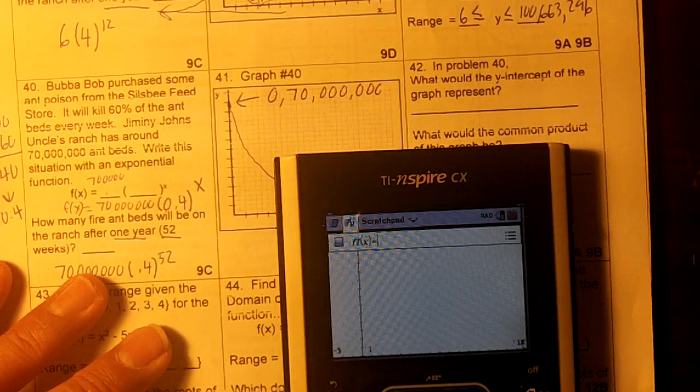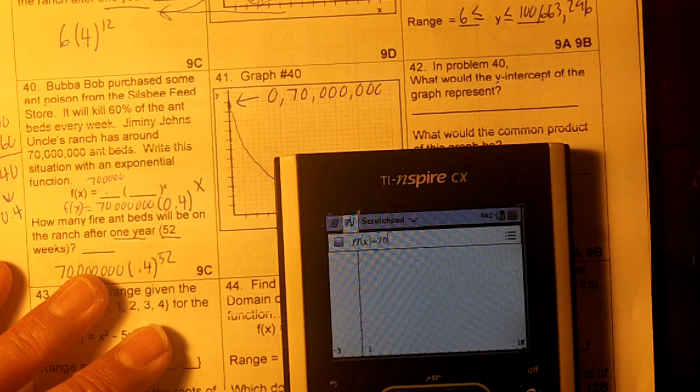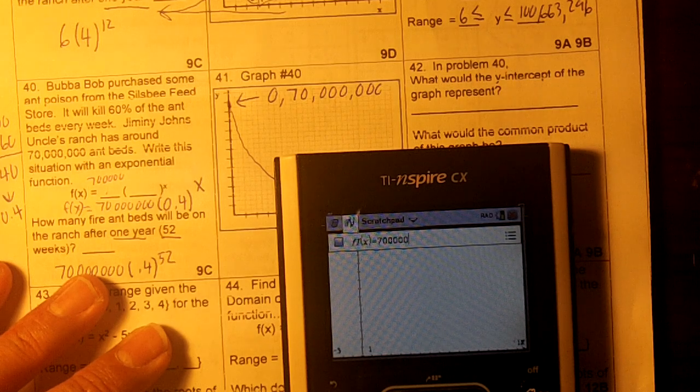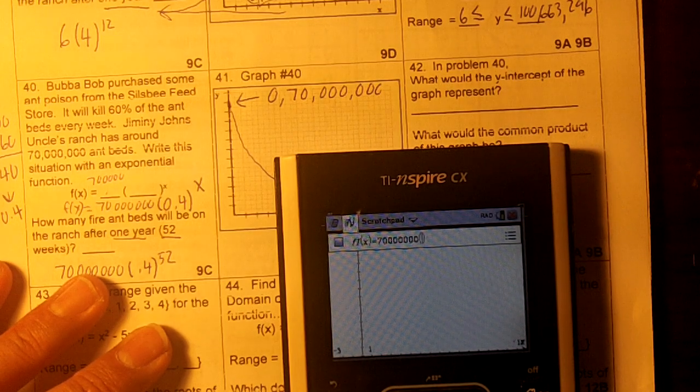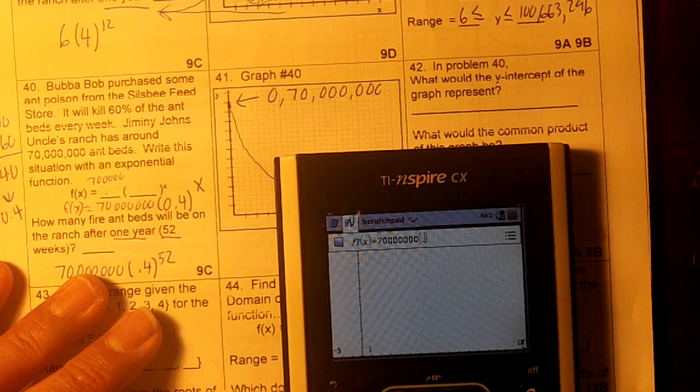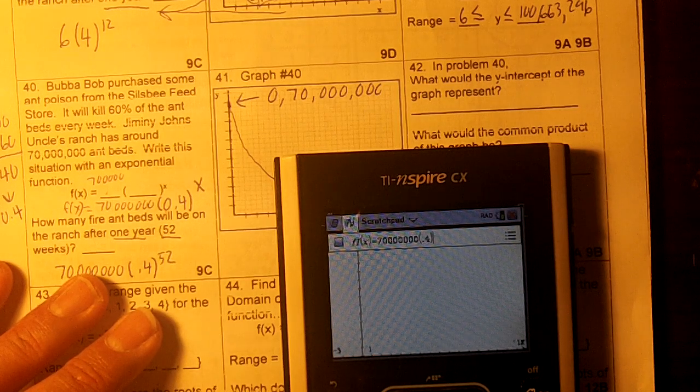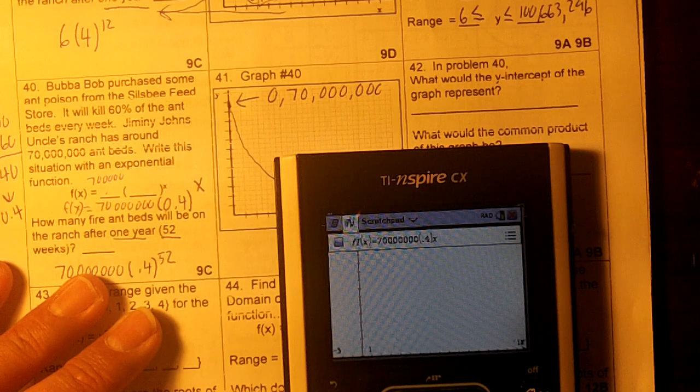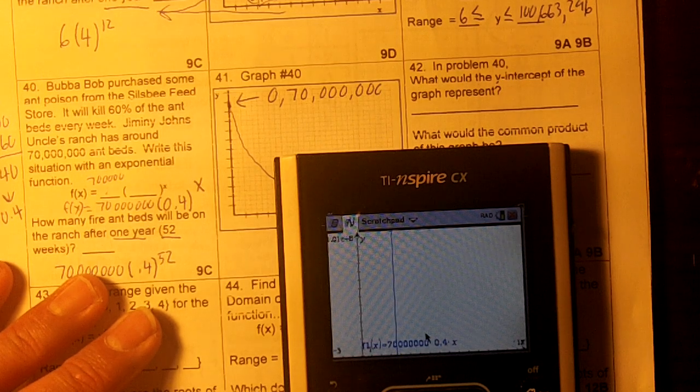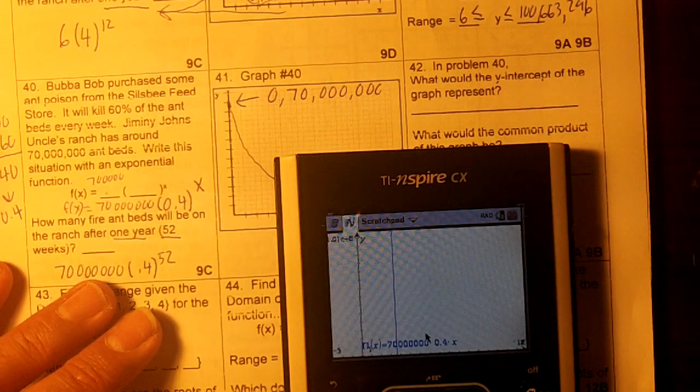And then 70 million, 70, 1, 2, 3, 4, 5, 6, parentheses, 0.4, caret x, hit Enter. And I'm not going to see any of the graph because the y-intercept's at 70 million, right?